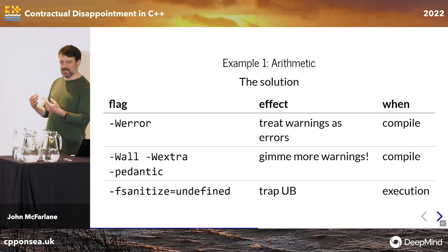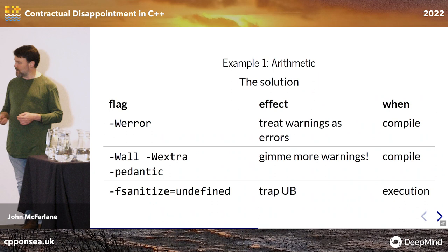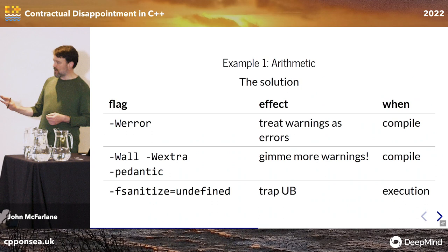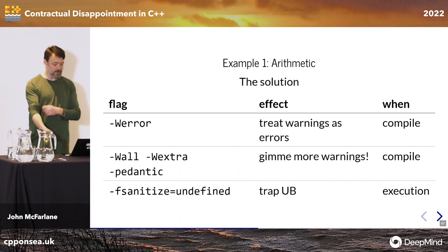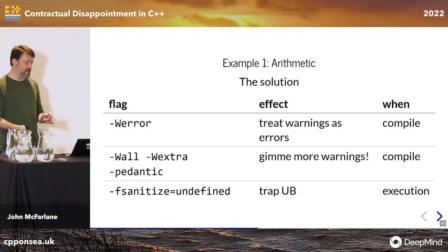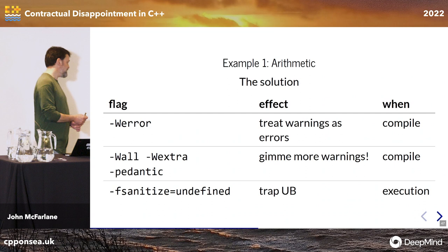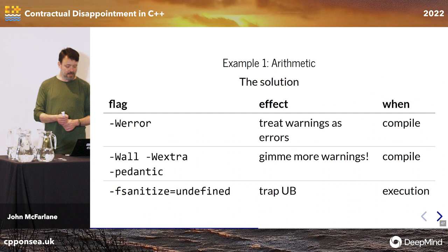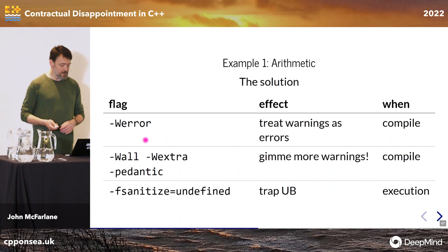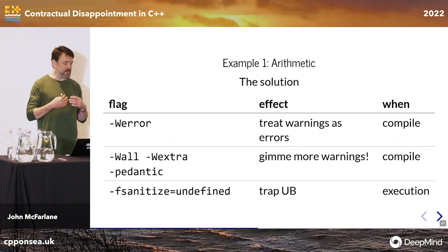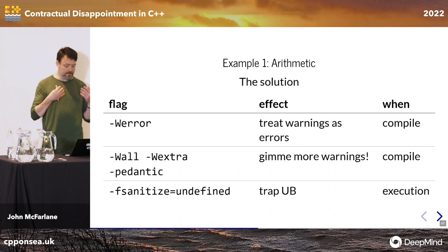I turn these flags on routinely and keep them on all the time. `-Werror` seals the deal: if those warnings are discovered, they're treated as if they were compiler errors — the compiler refuses to build the program. We have that zero tolerance to potential problems that I think is so important. But maybe less well-known yet really useful — we can still find problems at execution time, even with our emphasis on static compile-time safety. You should be writing tests and testing your code long before you release it.